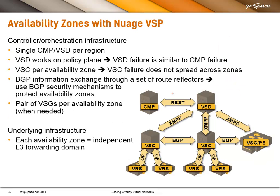Looking at what Nuage is doing with VSP: you would have a single cloud management platform per region and a single VSD per region. VSD works on the policy plane, which means a VSD failure is identical to a cloud management platform failure — you aren't able to add new things because you cannot get the policy needed to handle them. On the other hand, you would have one VSC controller cluster per availability zone, so if that cluster fails, the failure does not spread across multiple zones. BGP information is exchanged through a set of route reflectors.